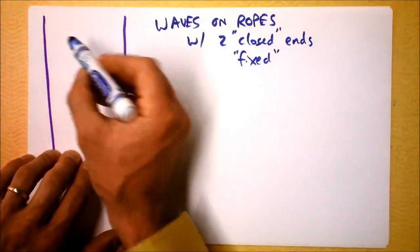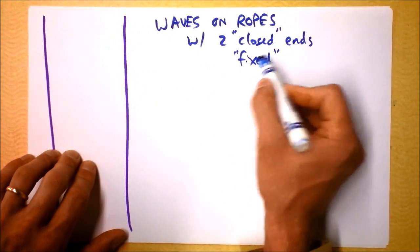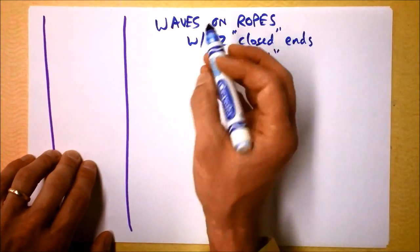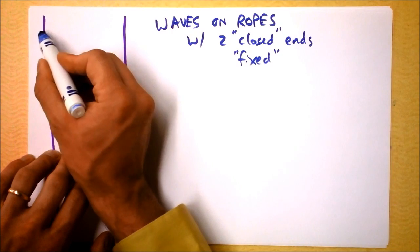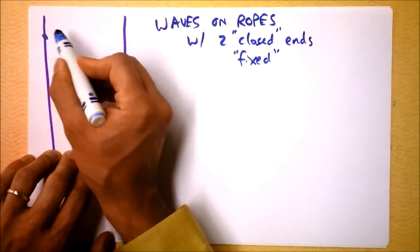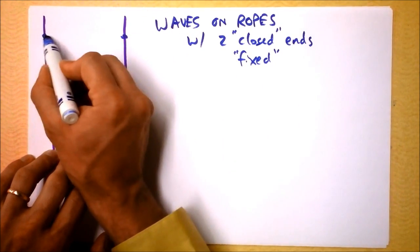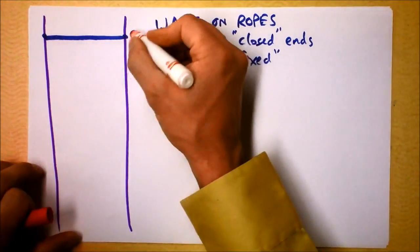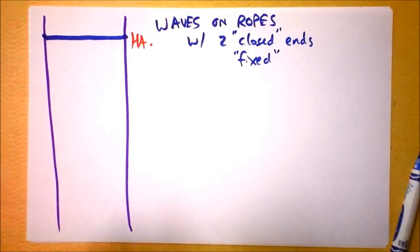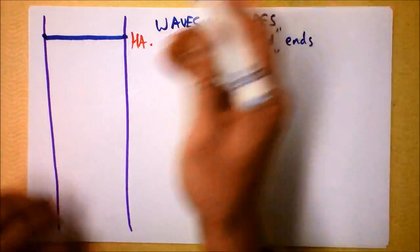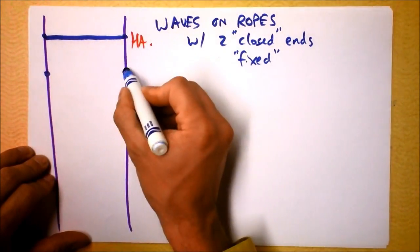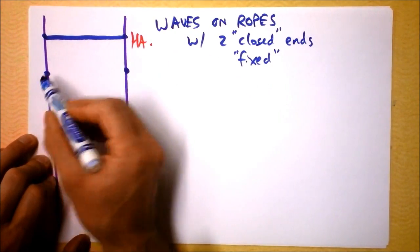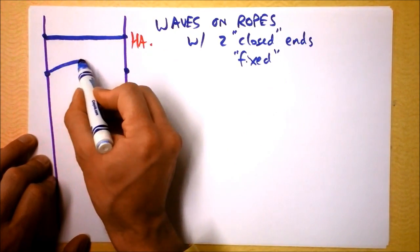Since we know that a closed end creates a node, we can't have any motion at the end. So first of all, a node and a node and a node all through — that's a rope that's not moving. Then the next case: I've got a node here and a node here, and what has to be in the middle? Why, of course, an antinode.